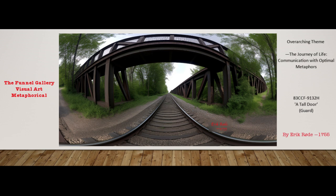Two — symbolic boundaries: the metaphor of the metal door with rivets illustrates how metaphors create symbolic boundaries that define and characterize various stages of life. Three — securing understanding: just as the metal door is secured with rivets, metaphors secure understanding and convey messages more effectively by providing relatable comparisons.